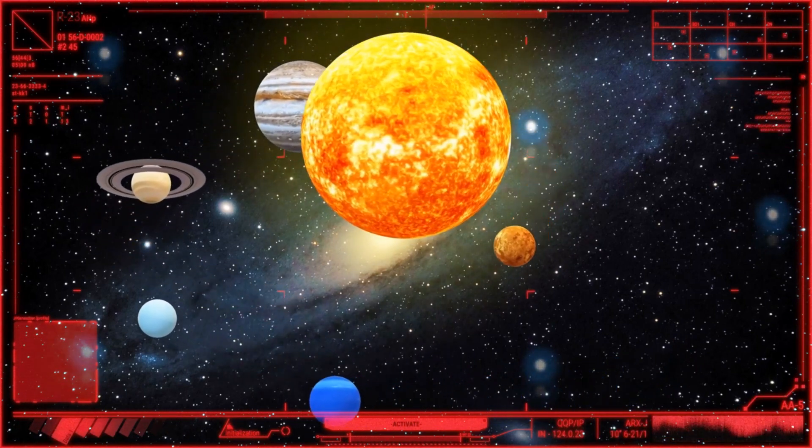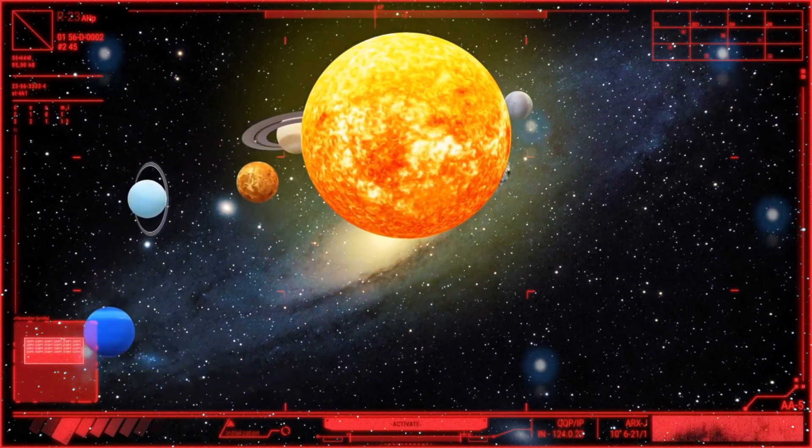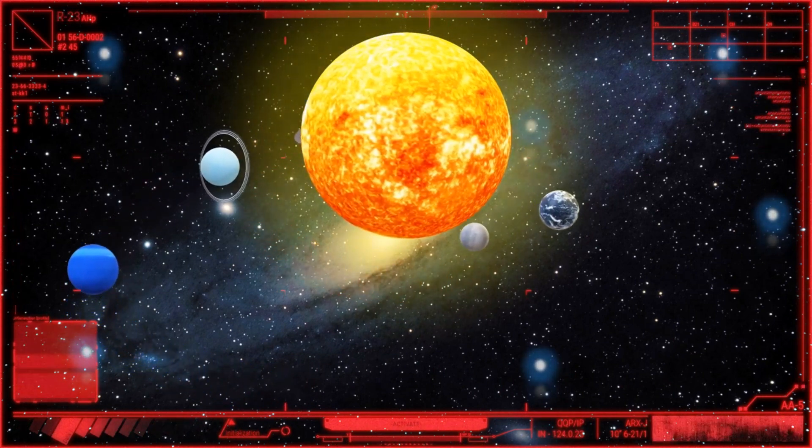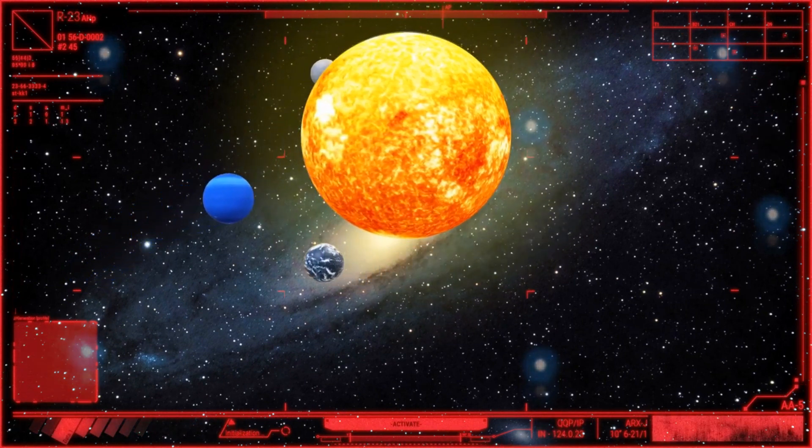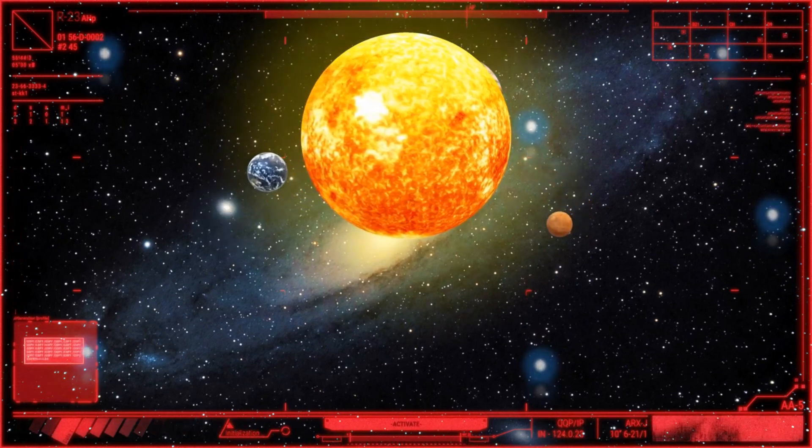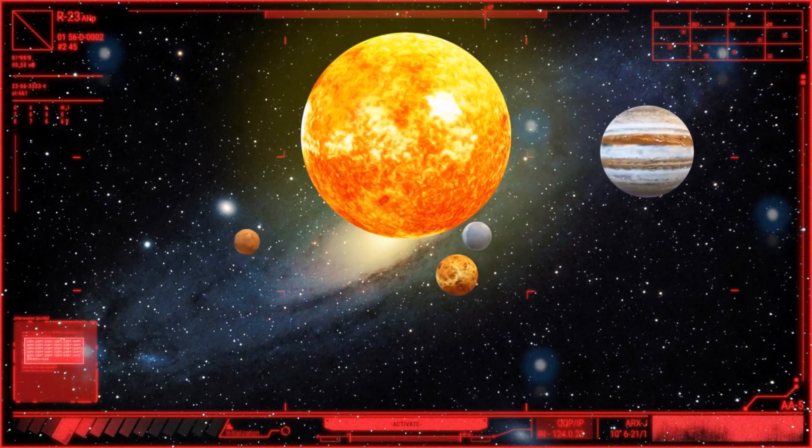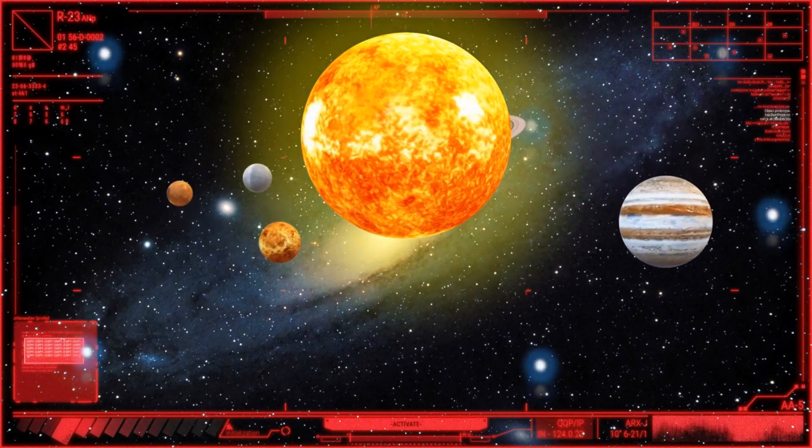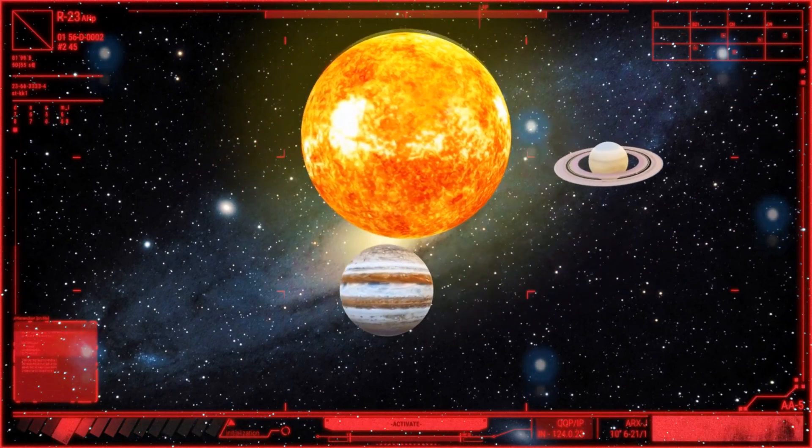Mercury. Mercury is the closest planet to the Sun and the smallest planet in the solar system. It consists mainly of rocks and metals such as iron and nickel. The distance from Mercury to the Sun is approximately 57.9 million kilometers. Interesting fact: despite its proximity to the Sun, Mercury can be very cold on its surface, as it has little to no atmosphere to retain heat.